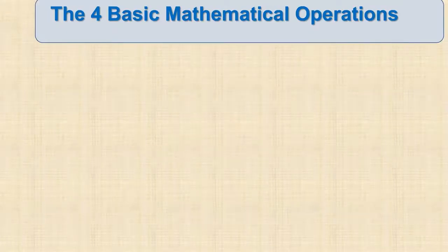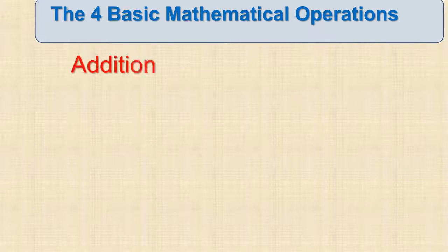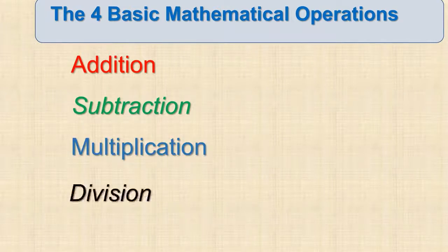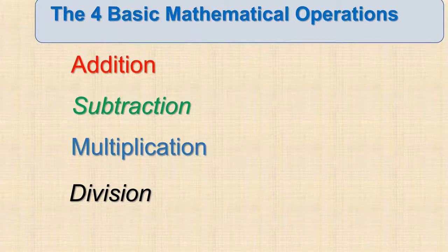What are the four basic mathematical operations? First we have addition, then we have subtraction, multiplication, and division. We are all familiar with these four basic operations, but do we actually know the terms used in the numbers involved in these operations?